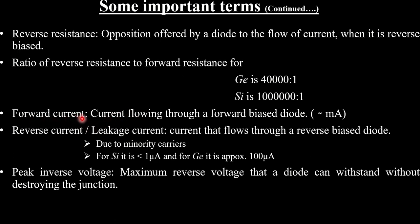Another term is forward current — the current flowing through a forward biased diode, which is of the order of milliamperes, typically hundreds of milliamperes.